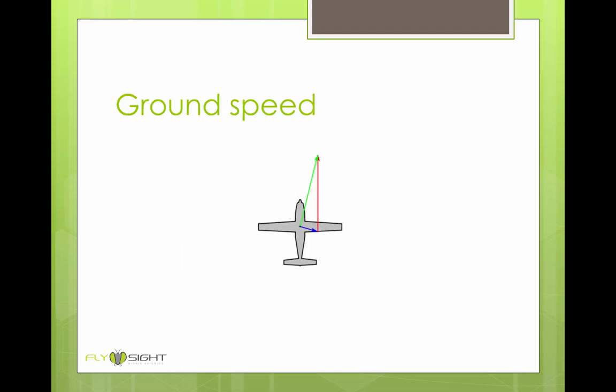If we add the aircraft's airspeed to the wind speed, we get the aircraft's velocity relative to the ground, which is shown by the green arrow.